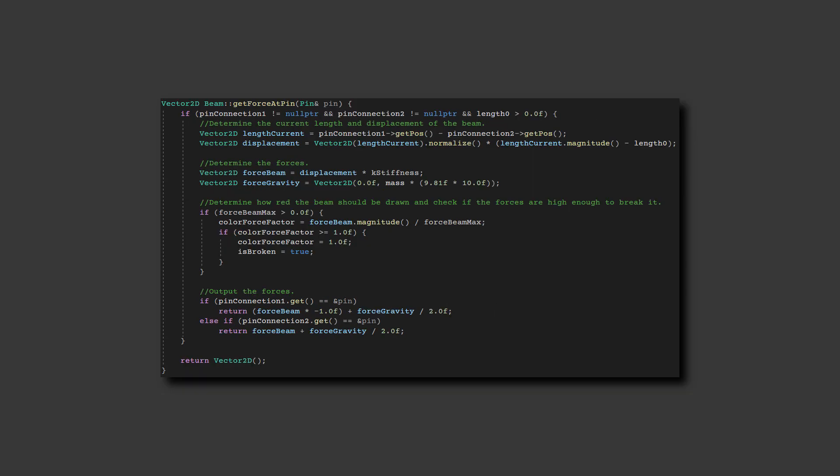The forces from the beam are calculated with the following code. First, the displacement is calculated and used to calculate the force in the beam. Then, the force of gravity is calculated.